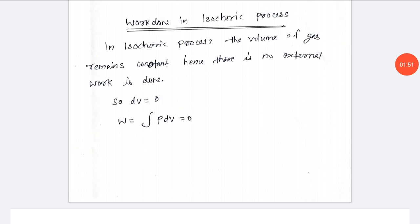What is the work done in the isobaric process? In the isobaric process, the volume changes and that volume change corresponds to work done. If there is no volume change, there is no external work done.